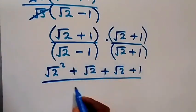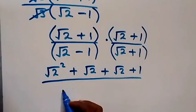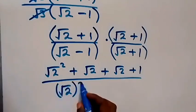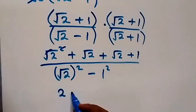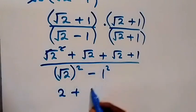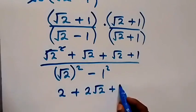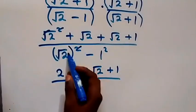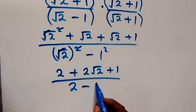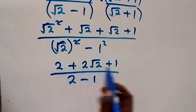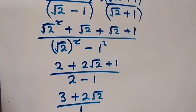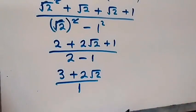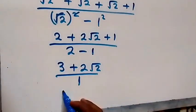Divided by the denominator — the conjugate follows the pattern of difference of two squares, so this is root two squared minus one squared. Up in the numerator, root two squared is two, and root two plus root two gives two root two, then plus one. In the denominator, two minus one squared is one. Collecting the constant terms: two plus one gives three, so we have three plus two root two over one.